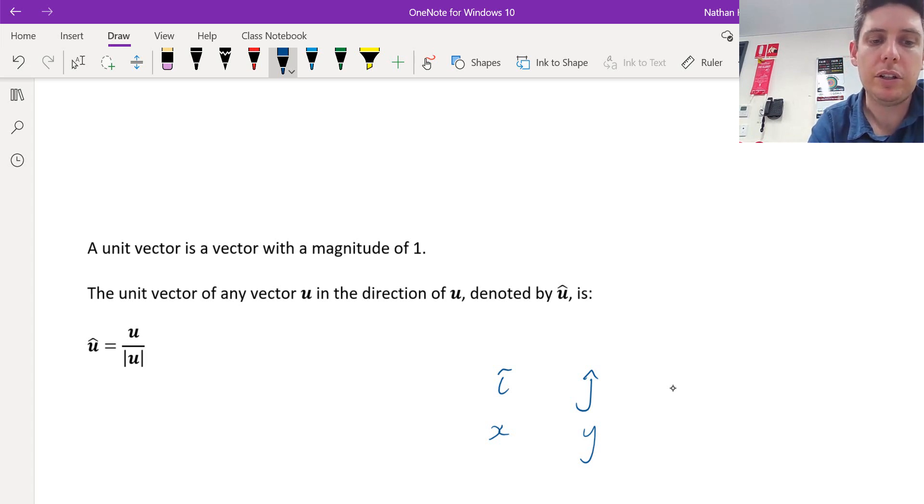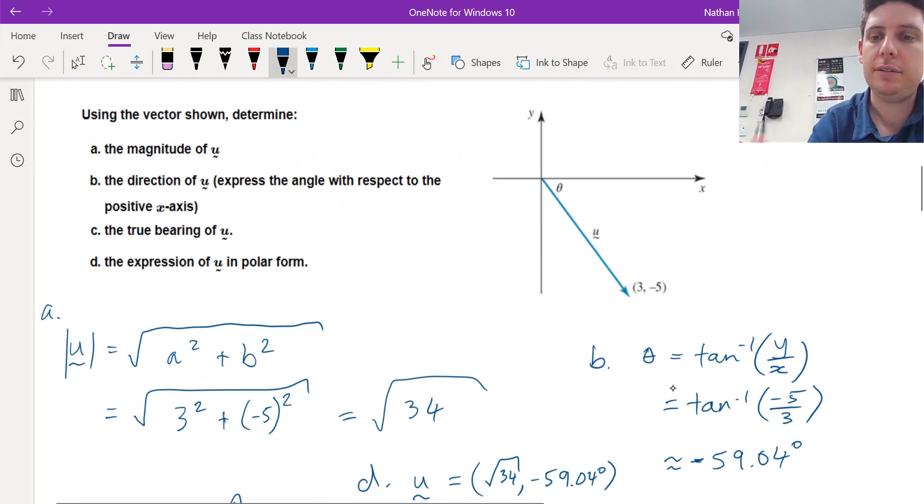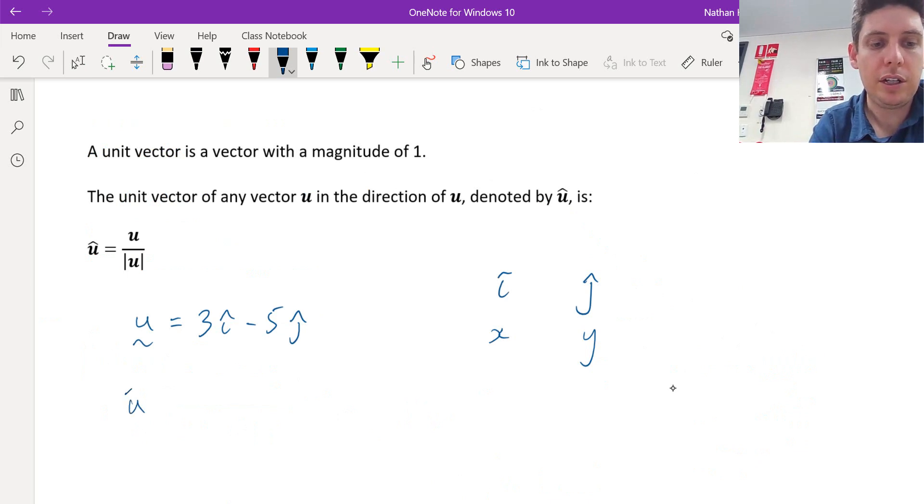So if we look at the previous example, u was 3i and negative 5j up here. So to convert u into a unit vector, we divide by the magnitude that we found, which was square root 34.